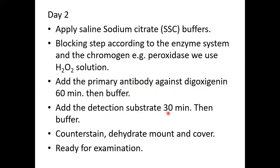If you want to use peroxidase, you can use hydrogen peroxide to block endogenous peroxidase. After washing, apply the primary antibody against digoxigenin. Then apply the detection substrate — if using peroxidase, the detection substrate is DAB (diaminobenzidine) together with hydrogen peroxide.